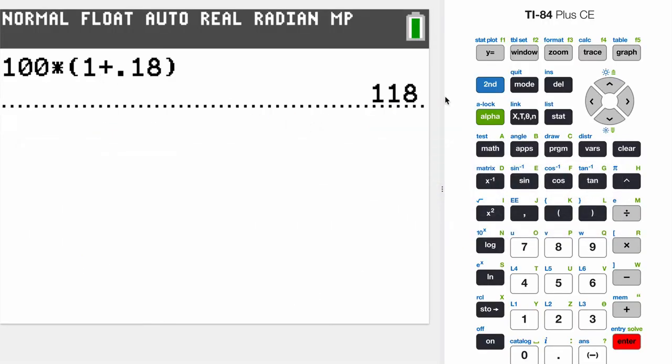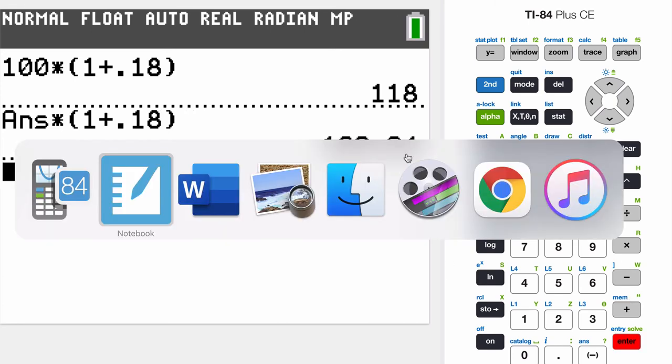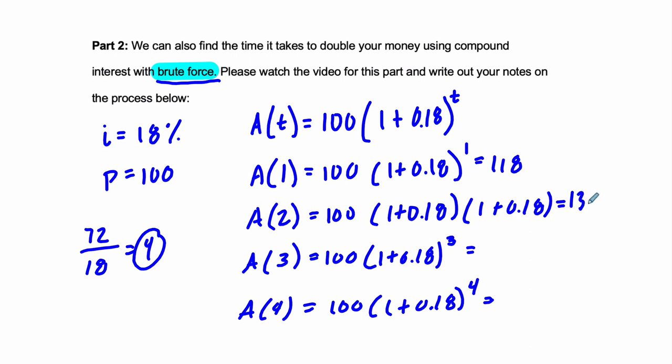So this is after one year. And then that is going to be times, in the second year, another 1 plus 0.18. We're adding another 18%. So 139.24, that's right here, 139.24.